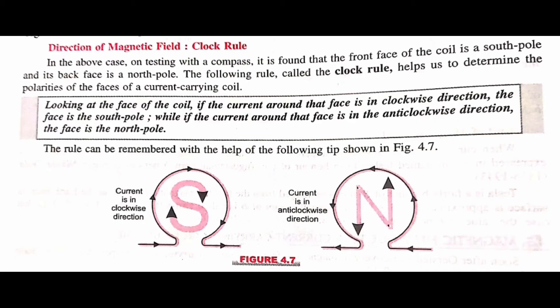The direction of magnetic field is determined by the clock rule. On testing with a compass, the front face of the coil is found to be a south pole and its back face is a north pole. The clock rule states: looking at the face of the coil, if the current around that face is in the clockwise direction, the face is the south pole; if the current is in the anticlockwise direction, it represents the north pole.